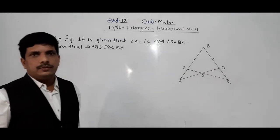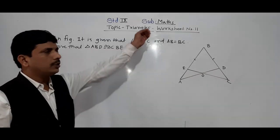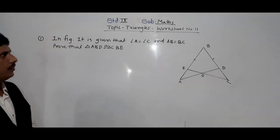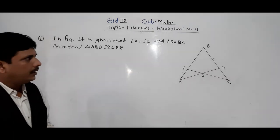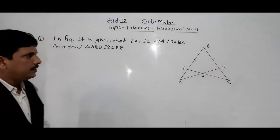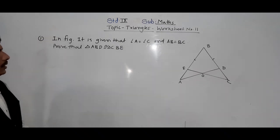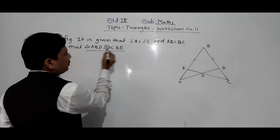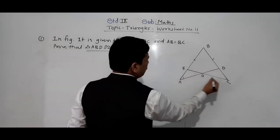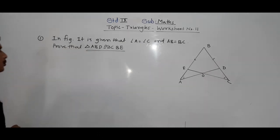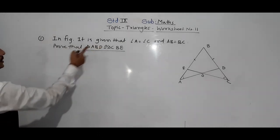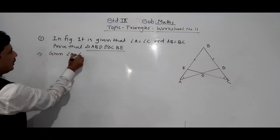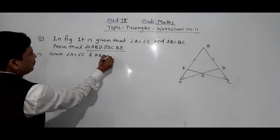Hello everybody, today we are going to see solutions of worksheet number 11. The first problem states that in the figure, angle A is equal to angle C and AB is equal to BC. Given: angle A is equal to angle C and AB is equal to BC.